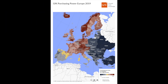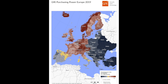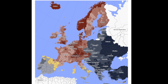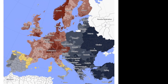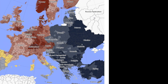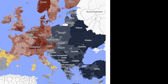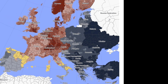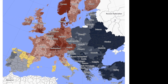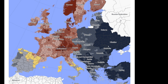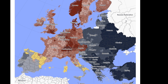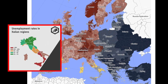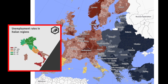This shows us the purchasing power of people throughout Europe, split into different regions. Eastern Europe has less purchasing power than much of the west. Spain has a fairly low purchasing power, as well as southern Italy — which also ties into that earlier map about unemployment in Italy. Interesting.